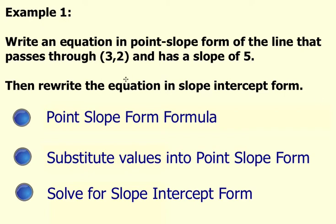So in this first example, we want you to write an equation in point-slope form of a line that will pass through this ordered pair that also has a slope of 5. So let's recall what point-slope form formula is.